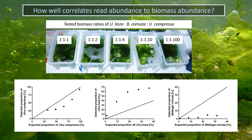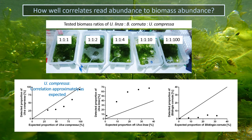So altogether, read abundances in field samples seem to meet our expectations. However, this was less the case when we conducted a lab experiment with mock communities of known densities. We mixed Ulva linza, Ulva compressa, and Blidingia minima in different proportions. In the case of Ulva compressa, the proportion of detected reads corresponded approximately to the proportion of biomass in the mixture, and the symbols are not too distant from the line of perfect correlation. However, in the case of Ulva linza, the proportion of reads was way higher than expected, and in the case of Blidingia, it was way too low.